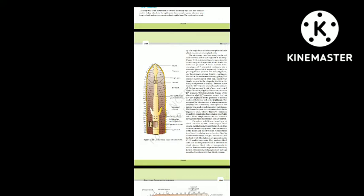Pheretima exhibits a closed type of blood vascular system consisting of blood vessels, capillaries and heart. Due to the closed circulatory system, blood is confined to the heart and blood vessels; contractions keep blood circulating in one direction. Blood glands are present on the 4th, 5th and 6th segments; they produce blood cells and hemoglobin which is dissolved in blood plasma. Blood cells are phagocytic in nature. Earthworms lack specialized breathing devices; respiratory exchange occurs through the moist body surface.